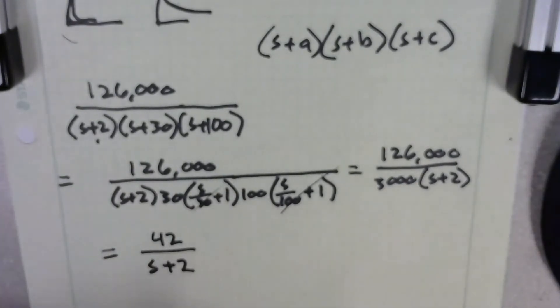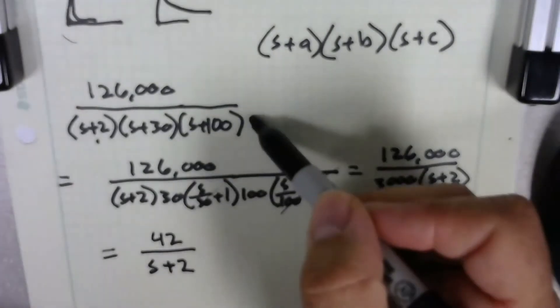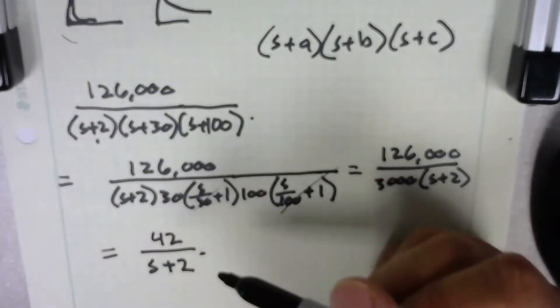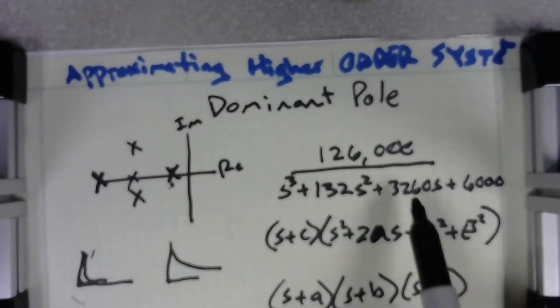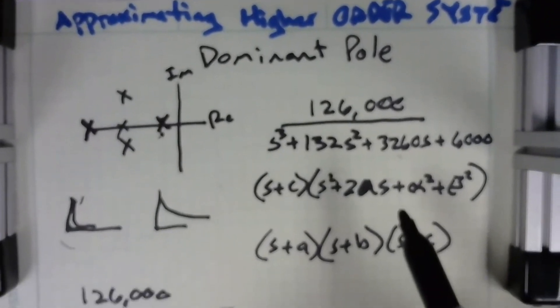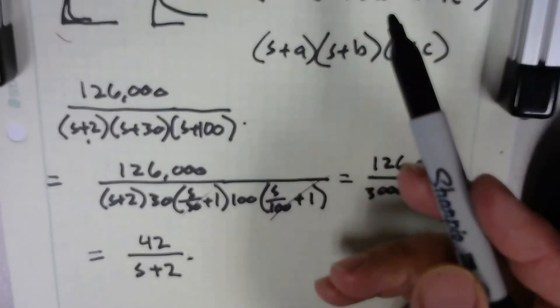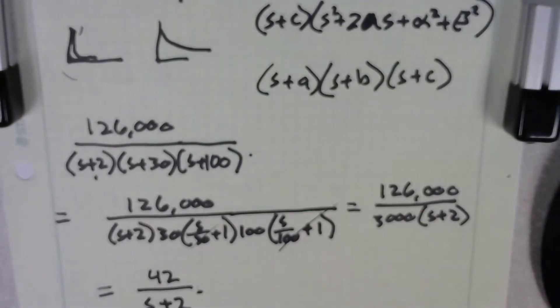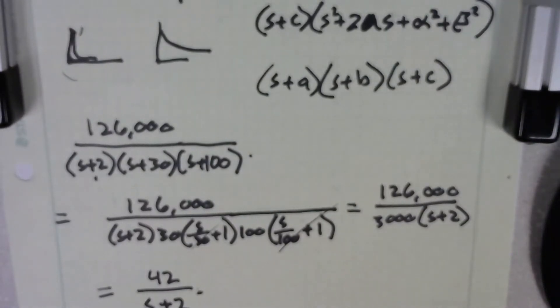So what I am now claiming is that this function and this function are approximately the same thing - that this right here is the same thing as this right here. They do not look the same, so how can we test to see if they're really approximately the same thing? My suggestion is MATLAB.